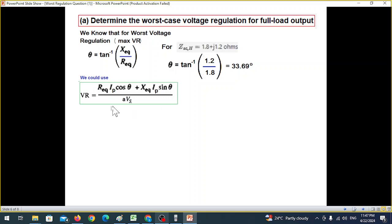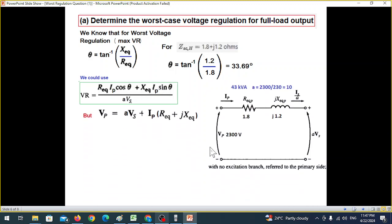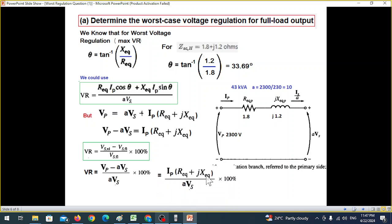We could have used this relation, plugging in IP and the value of theta, but there is a simpler one. From here, you can see that VP is AVS plus the voltage drop. So AVS plus I_P times Z equivalent. If you move AVS on the left, then VP minus AVS equals I_P R equivalent. And if we look at the voltage regulation equation, V no load minus V full load, we can write it as VP minus AVS divided by AVS. Now VP minus AVS, we can write I_P Z equivalent divided by AVS.